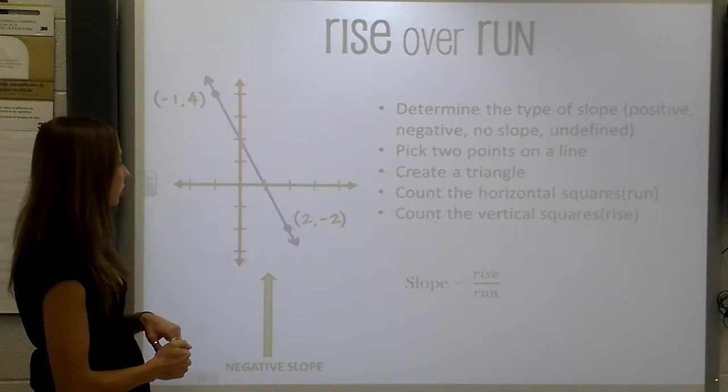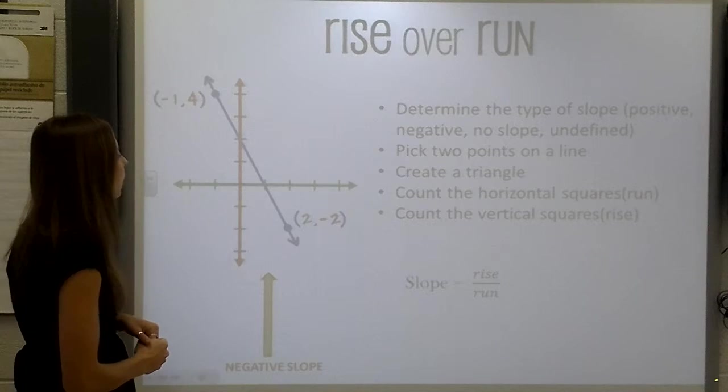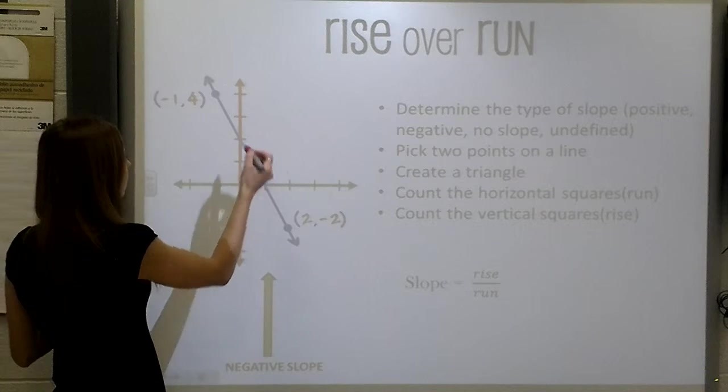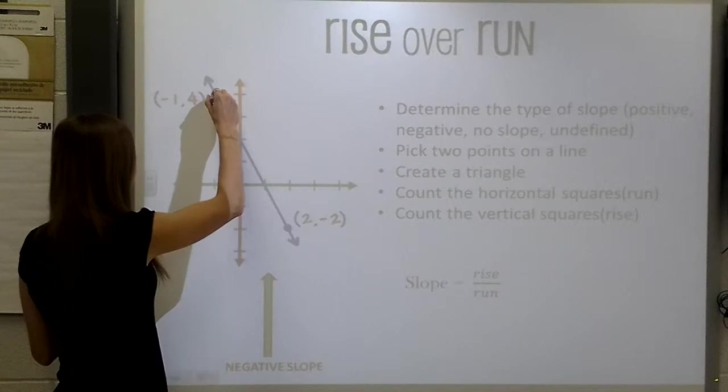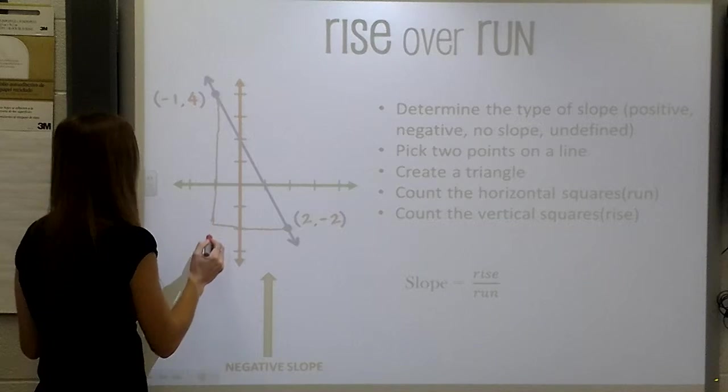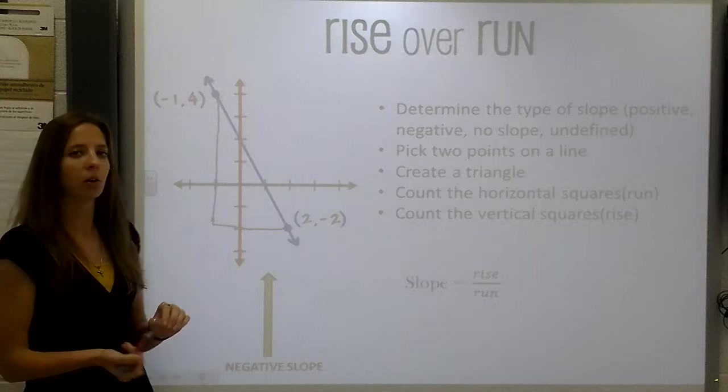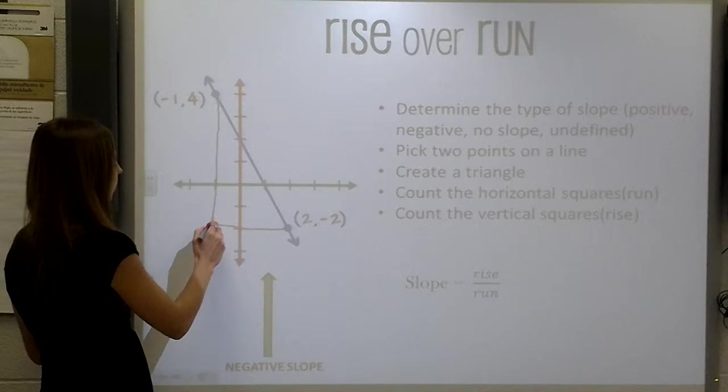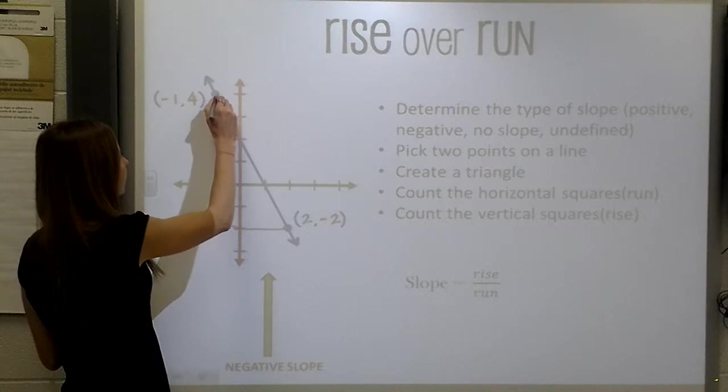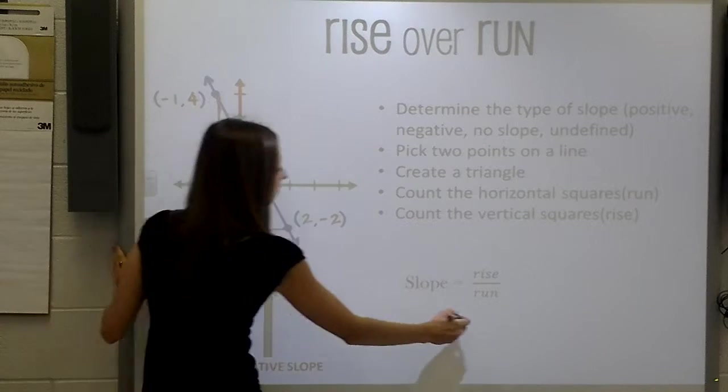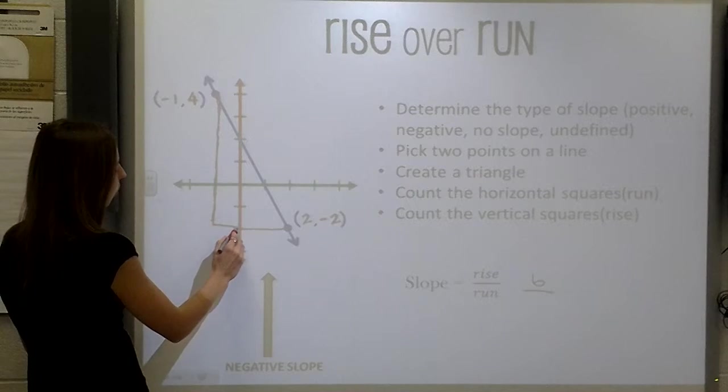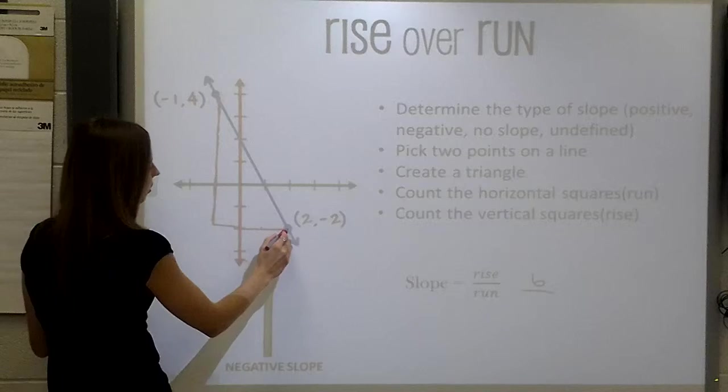If we take another look at this line, we can do the same thing. We are given our line on a graph, so let's create the triangle. The first thing we are going to do is count our rise. So we are going to go 1, 2, 3, 4, 5, 6 points up. And then we are going to run 1, 2, 3.